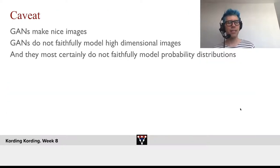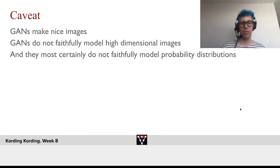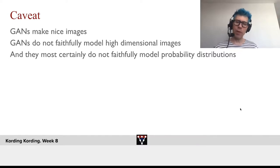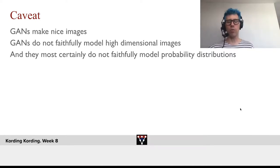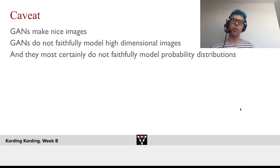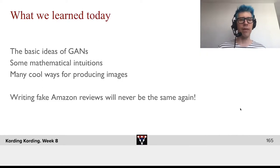There are also further caveats. GANs make nice images, but they do not faithfully model high-dimensional images. A lot of people, when they first get exposed to GANs, think: 'This is awesome — we now have infinite training data because we can just generate it with GANs.' But that's not the case. GANs are not properly modeling the real high-dimensional images; they're just really good at making us feel like these things are real. It's certainly not a great model for probability distributions.